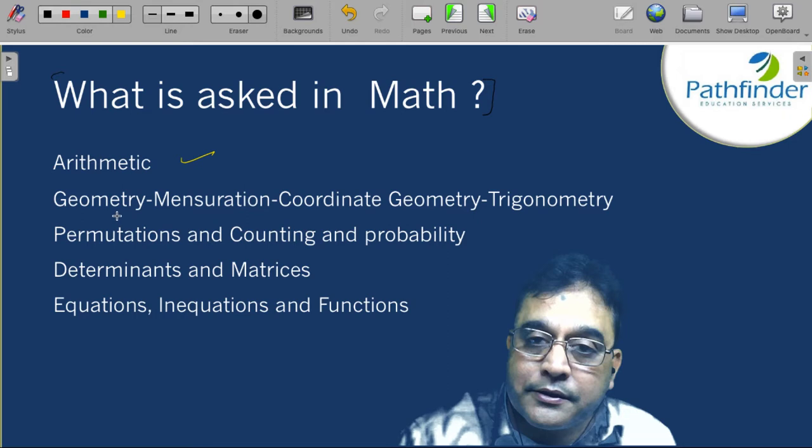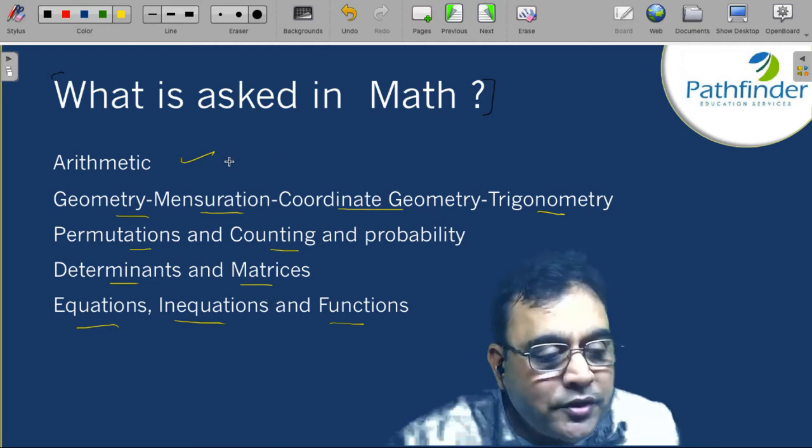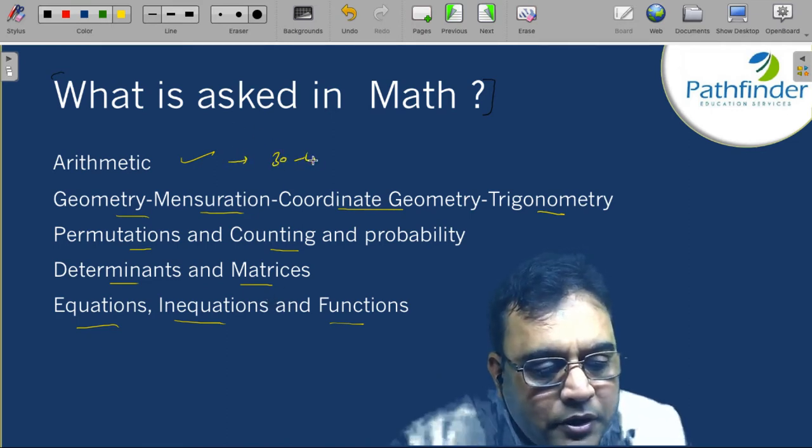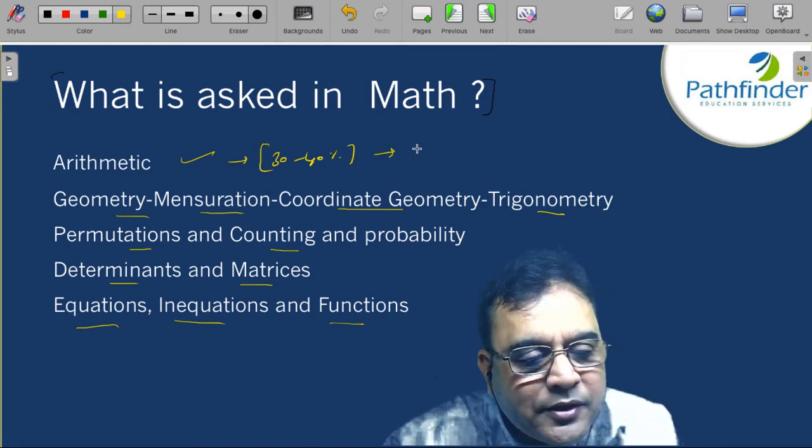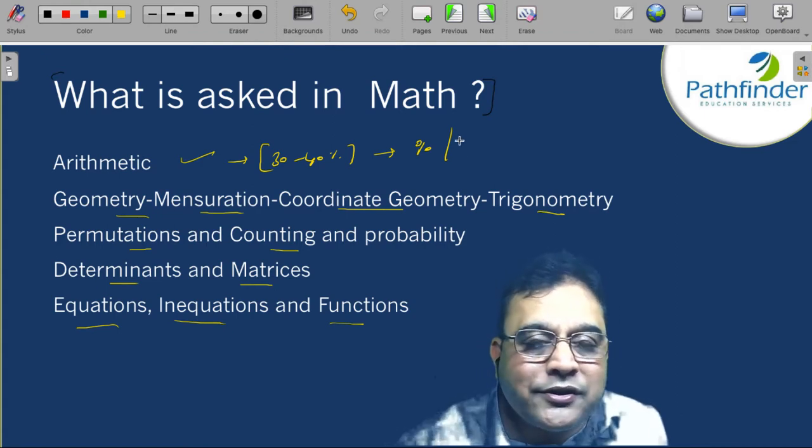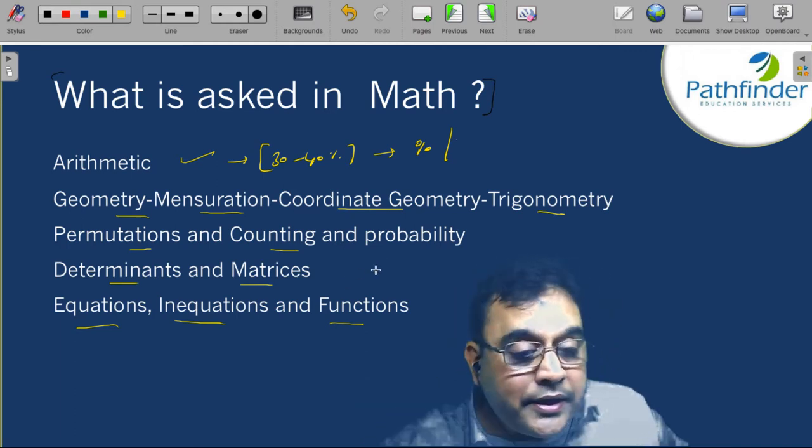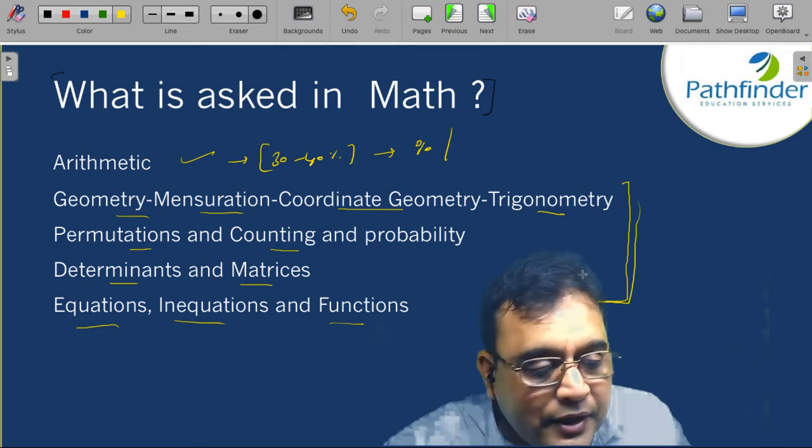You have questions on arithmetic. You have questions on geometry, mensuration, coordinate geometry, trigonometry. Then you have questions on permutation, counting and probability. You have questions on determinants and matrices. You have questions on equations, inequations and functions. These are the five primary areas from which I have seen questions. And still, around 30 to 40 percent of questions are based on arithmetic. Something like percentage, profit and loss, average, time and distance, time and work. This forms around 30 to 40 percent of your questions. The remaining part is taken up by these areas.